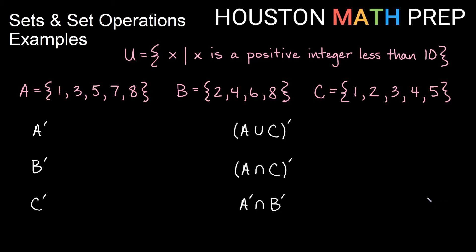Looking at some complements — A complement. Remember, that's all of the things in the universal set that are not in A. The universal set is 1 through 9. So we want all counting numbers 1 through 9 that are not in A. 2 is not in A, 4 is not in A, 6 is not in A, and the only remaining number 1 through 9 would be 9. So 2, 4, 6, and 9 are the elements in the universal set but not in set A.